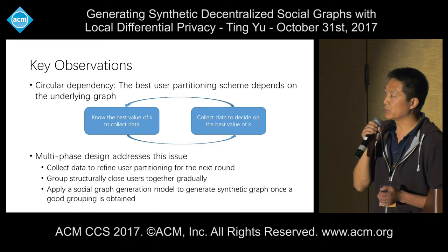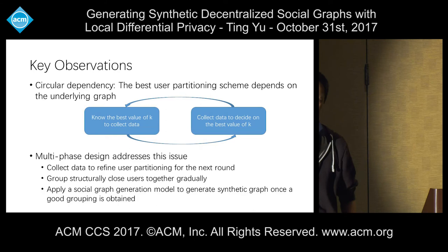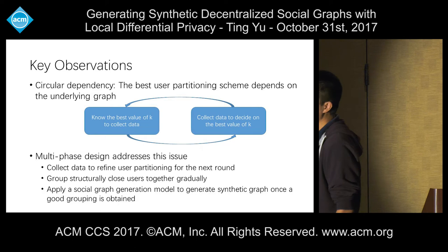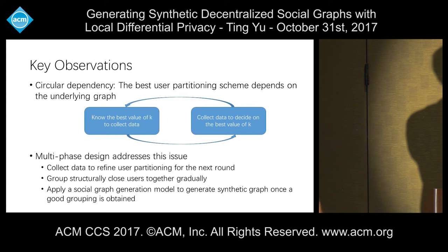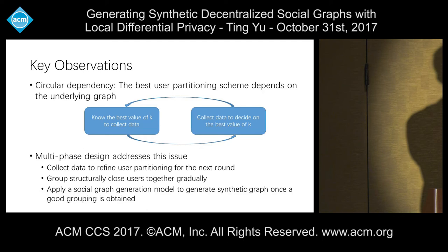What is a good partition? Ideally, we cluster nodes that are structurally connected together—for example, community members. But this introduces a circular dependency: to get good grouping you need the graph structure, and to know the graph structure you need the good grouping. To break this dependency, we cannot rely on a single round of information collection—we need an iterative process. At the beginning, we ask users to report degrees to a random partition. Based on users' input, we gain some idea of which users are closer, and we refine the grouping over multiple rounds.